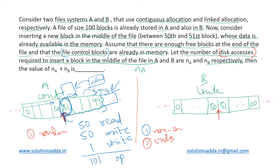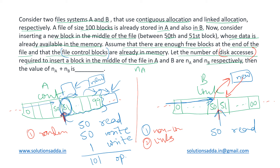One disadvantage here is that to reach the position after block 50, we must traverse all blocks from 0 to 50 — we cannot directly jump. This involves 50 read operations. After reaching block 50, we insert the new block just as we insert a new node in a linked list: we link the new block to 51 and link block 50 to the new block. This takes 2 write operations.